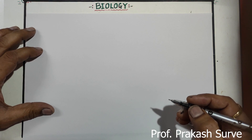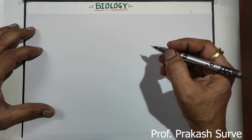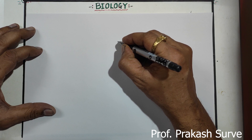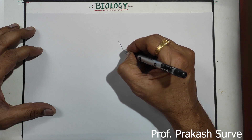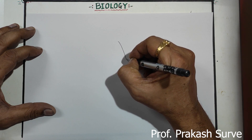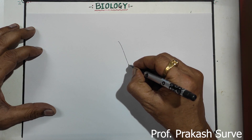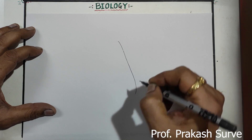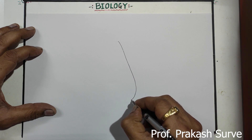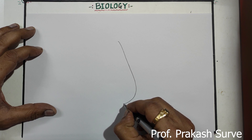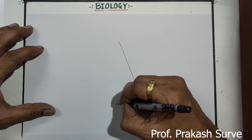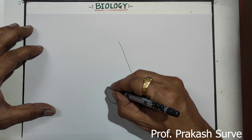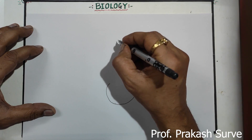Welcome dear students. Today we will see about the analysis of human testes. Here first we will make the outer line of the testes — bring it down, make the curve and bring it up to here.